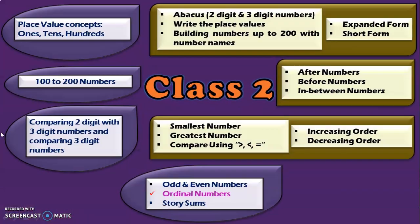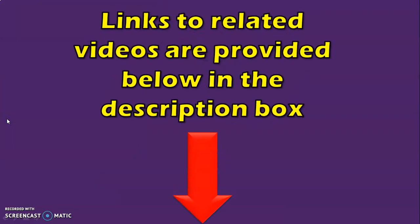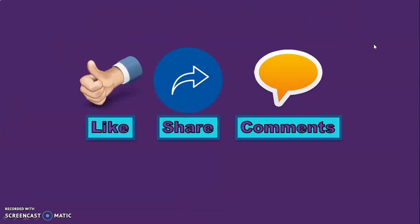Hope you found this activity interesting. With that, we complete the learning outcome: Ordinal Numbers. These are all the other learning outcomes in class 2, and I have explained about each of them in detail in my class 2 learning outcome video — link is given below in the description box. Links to those individual videos are also given below. You may also click on the in-screen video which will take you to the playlist for class 2 under number concepts. If you like my video, give a thumbs up and share it with your friends. Please provide your valuable comments in the comment section. Thank you for watching — see you again in the next session.